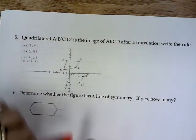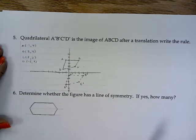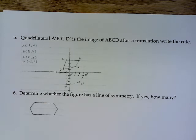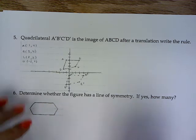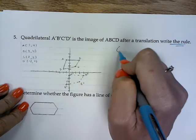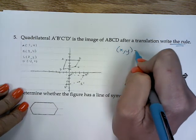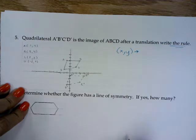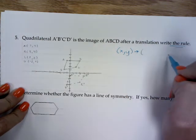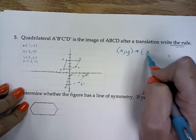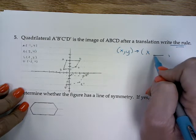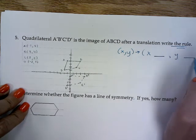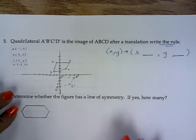It says ABCD is the image of A prime, B prime, C prime is the image, which you should know. After this translation, what's my rule? Remember, when I'm writing the rule, I have to write the beginning that says X did this, Y did this. Every rule starts with that. So with my X, what did I do to it? With my Y, what did I do to it?